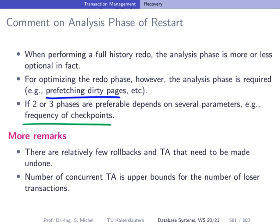Some remarks about rollbacks and aborts: in normal operation there are relatively few rollbacks to savepoints and aborting transactions. Also, the number of concurrent transactions allowed in the database — usually a configurable parameter — is the upper bound for the number of loser transactions. This makes sense because if we allow 100 transactions to run concurrently, at most we can have 100 loser transactions.